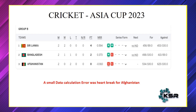Six countries participated: Afghanistan, Nepal, Pakistan, Sri Lanka, India, and Bangladesh. They were split into two groups — in one group we had Sri Lanka, Bangladesh, and Afghanistan. The top two teams from this group would qualify for the next round, but a very small, crucial mistake ended up making Afghanistan lose out of the tournament.